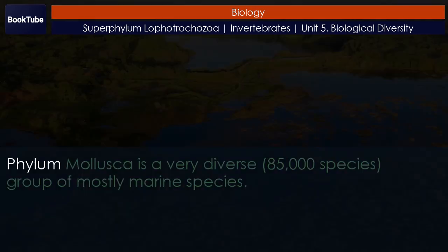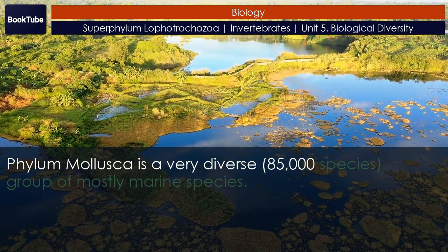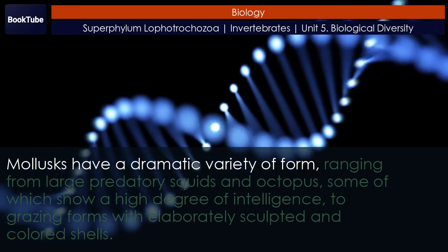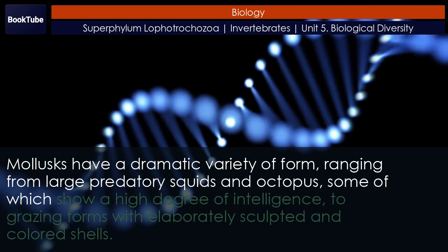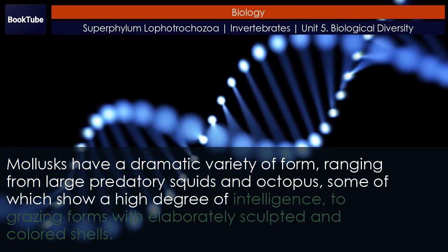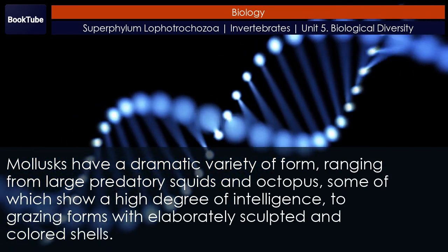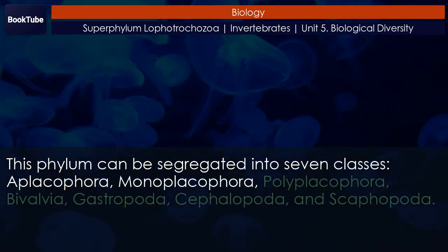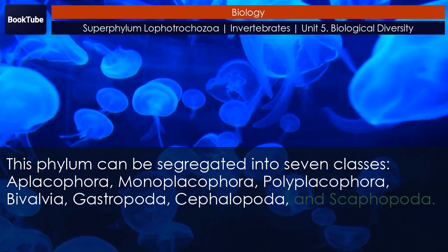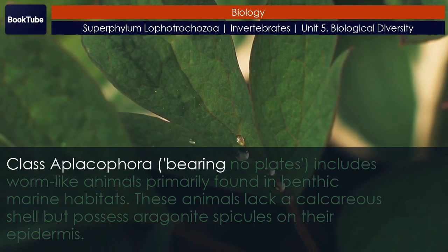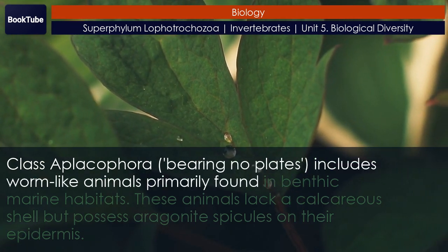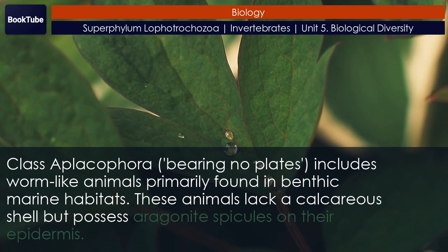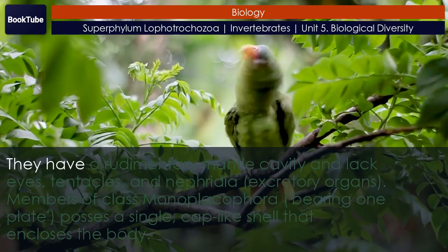Classification of Phylum Mollusca. Phylum Mollusca is a very diverse group of mostly marine species, with approximately 85,000 species. Mollusks have a dramatic variety of form, ranging from large predatory squids and octopuses — some of which show a high degree of intelligence — to grazing forms with elaborately sculpted and colored shells. This phylum can be segregated into seven classes: Aplacophora, Monoplacophora, Polyplacophora, Bivalvia, Gastropoda, Cephalopoda, and Scaphopoda. Class Aplacophora, meaning bearing no plates, includes worm-like animals primarily found in benthic marine habitats. These animals lack a calcareous shell but possess aragonite spicules on their epidermis, and have a rudimentary mantle cavity lacking eyes, tentacles, and nephridia.